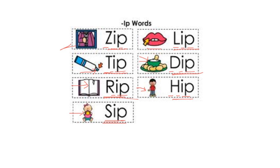So listen to all these sounds: zip, lip, tip, dip, rip, hip, sip. All these words have the sound -ip at the end. Can you think of other words that end with -ip? Good job.